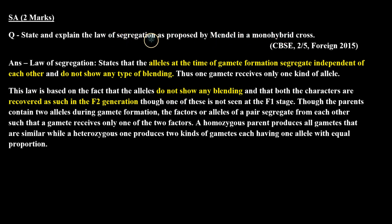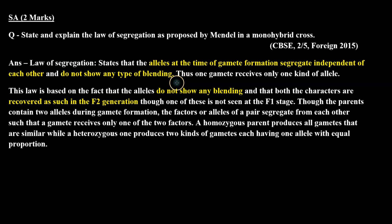Let's check the answer. Mendel told that the two alleles are independent at the time of gamete formation and there is no blending. The law of segregation states that the alleles at the time of gamete formation segregate independent of each other and do not show any type of blending. Thus one gamete receives only one kind of allele. This law is based on the fact that the alleles do not show any blending and that both the characters are recovered as such in the F2 generation.